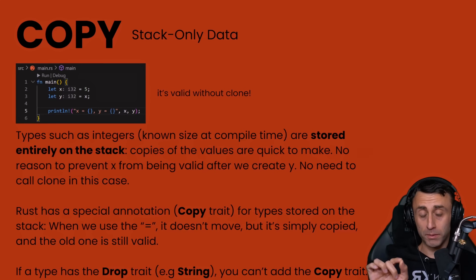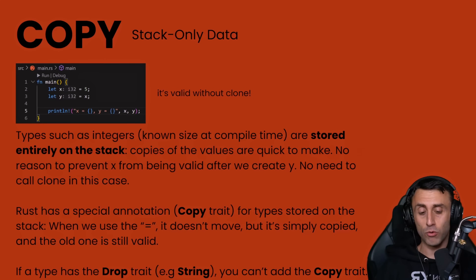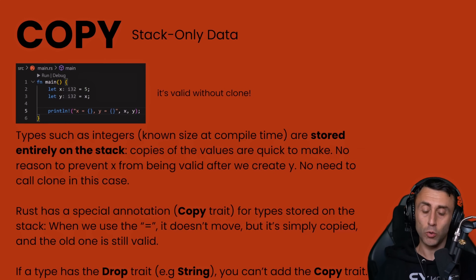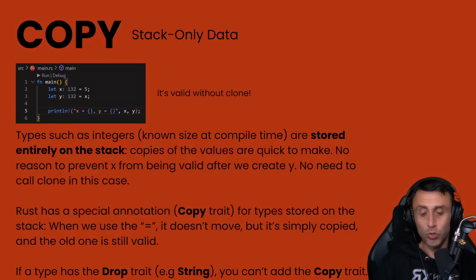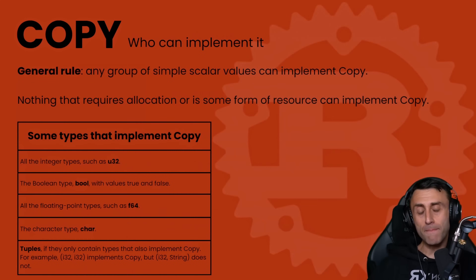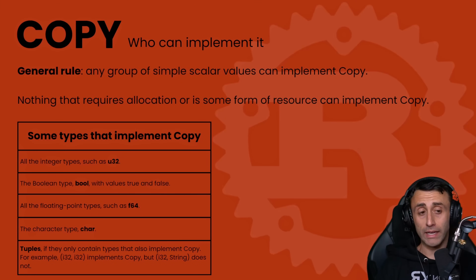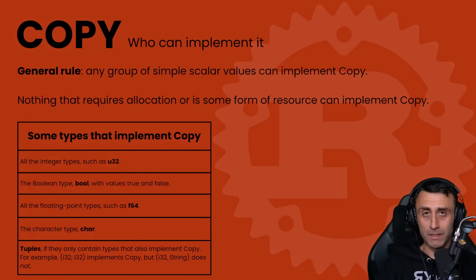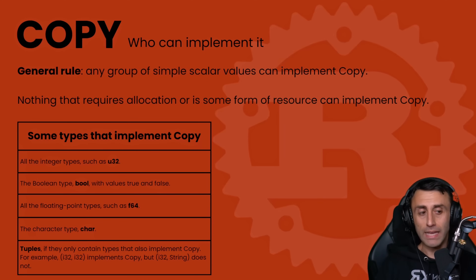If a type has the drop trait — like String, which needs to free memory at the end of its scope — you can't also add the copy trait to it. They need to behave differently because they are stored on the heap and must use the drop process. As a general rule, simple scalar values can implement copy. If a type requires allocation or some form of resource and is stored on the heap, it can't implement the copy trait.